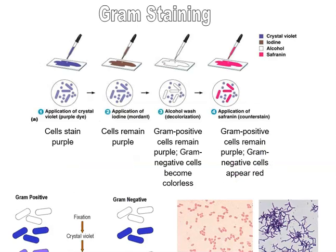The steps of the Gram staining process: First, apply crystal violet, which is a purple dye — this turns the cells purple. Then apply the iodine; the cells still look purple. Then wash with alcohol: the Gram positive cells stay purple, but the Gram negative cells are now colorless. Then apply the safranin: the Gram positive cells still remain purple, but the Gram negative cells appear red.